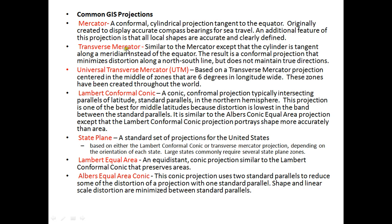The Transverse Mercator is similar to the Mercator. The result is a conformal projection that minimizes distortion in the north-south direction, but does not maintain true directions — there are some limitations. The Universal Transverse Mercator, or UTM, is based on transverse Mercator projections centered in the middle of zones that are 6 degrees of longitude wide. These zones have been created throughout the world.